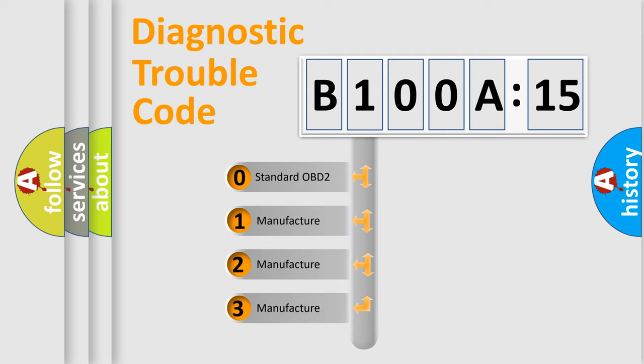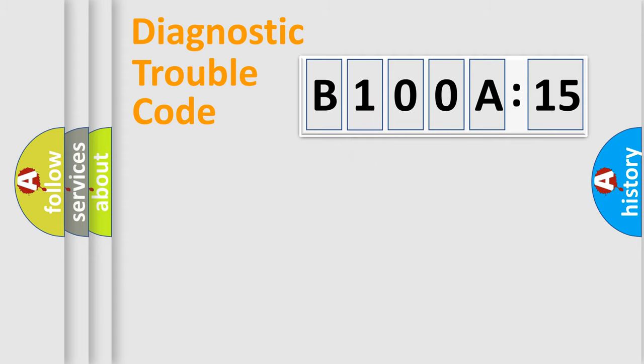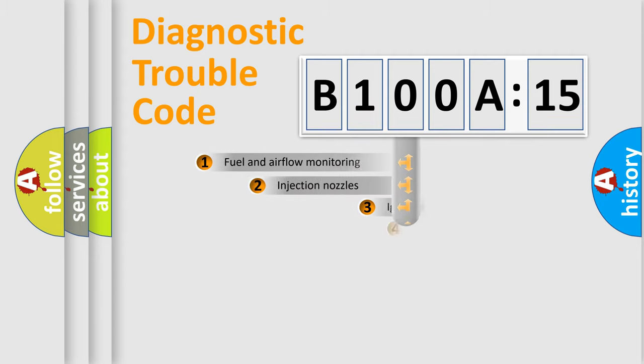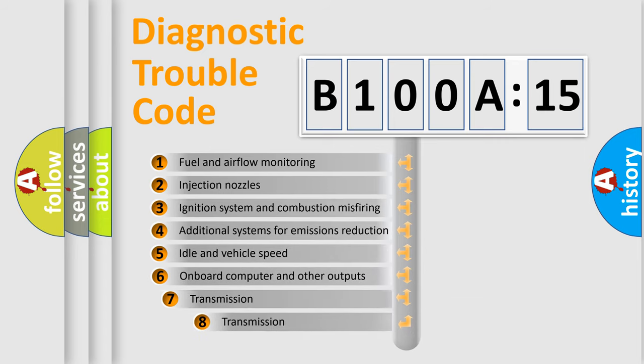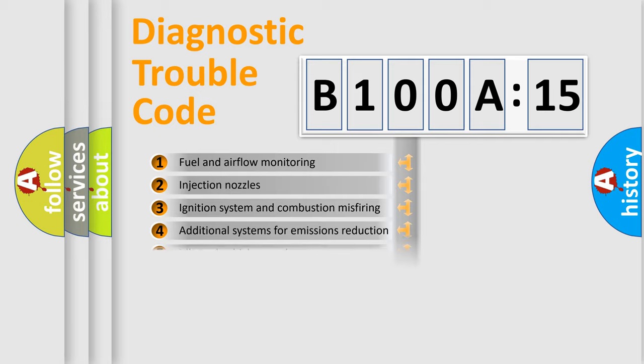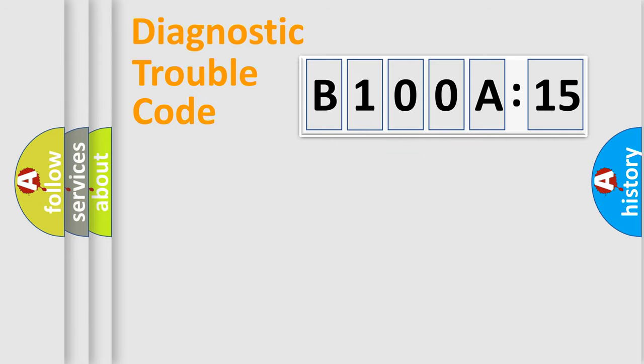If the second character is expressed as zero, it is a standardized error. In the case of numbers 1, 2, 3, it is a more prestigious expression of the car-specific error. The third character specifies a subset of errors. The distribution shown is valid only for the standardized DTC code. Only the last two characters define the specific fault of the group.